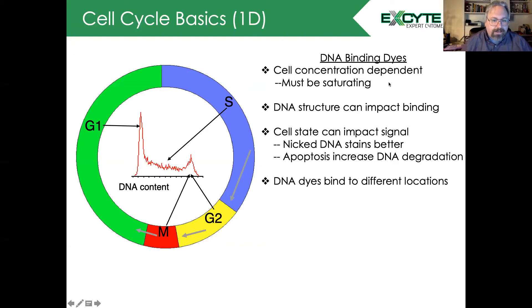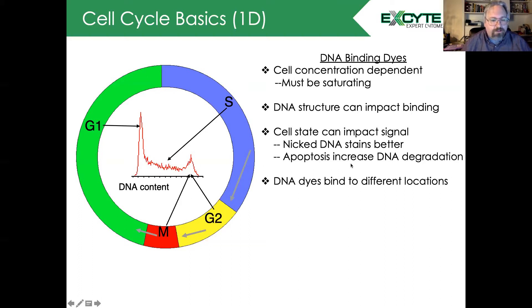DNA binding dyes are cell concentration dependent, so you need to optimize this and have a saturating concentration. Your DNA structure can impact the binding, and the cell state can also impact your signal. DNA stains better when the chromatin is accessible, and during apoptosis there is an increase in DNA degradation which will result in a sub-G1 peak.